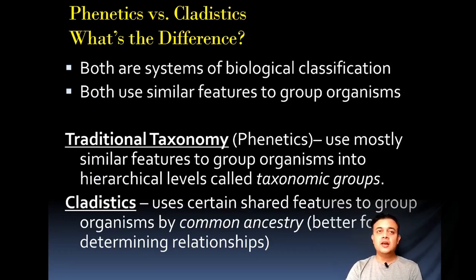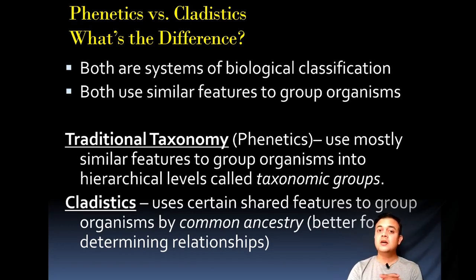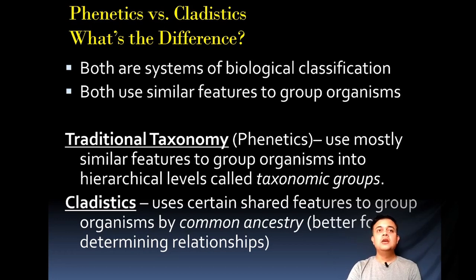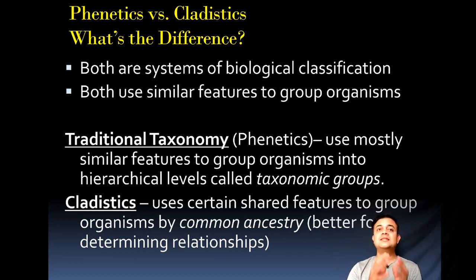Both cladistics and phenetics are systems of biological classification, and both use similar features to group organisms — whether morphological similarity or deeply conserved molecular similarities. Traditional taxonomy is usually phenetics, used by looking at similar features to group organisms into hierarchical levels called taxonomic groups.